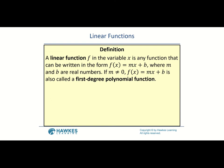A linear function — typically we use the function f, though it can be g or h — is any function that can be written in the form f(x) = mx + b, where m and b are real numbers and m cannot be zero. This is also called a first-degree polynomial function because the variable x is to the first power with no higher power in the expression.